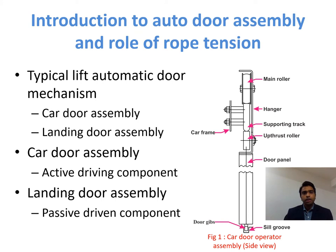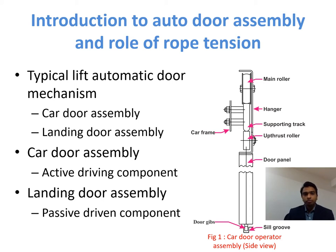I will explain a little information about the auto door mechanism and its components. A typical lift auto door mechanism consists of a car door assembly and a landing door assembly. The car door assembly is an active driving component — that is, the motor and its driving unit are connected to the car assembly — and according to instructions given by the control panel, it takes action.